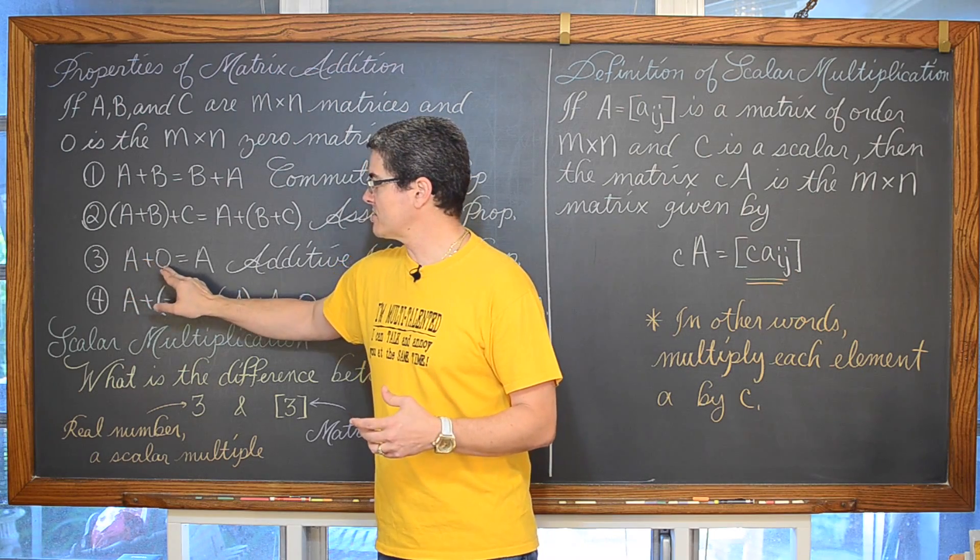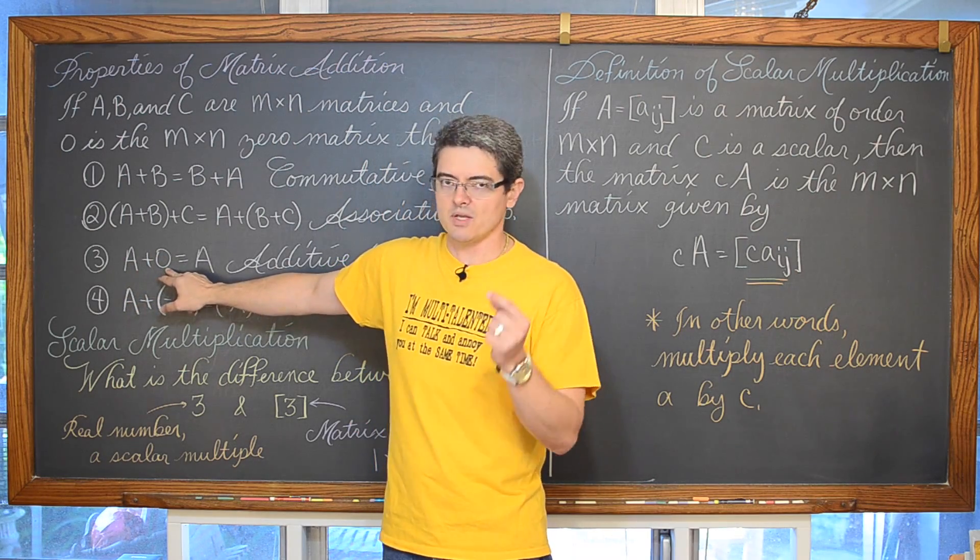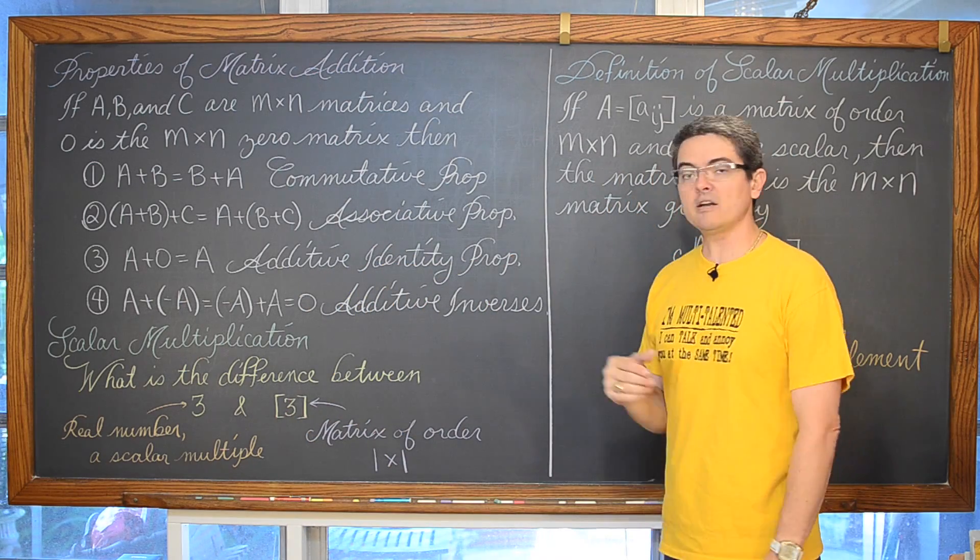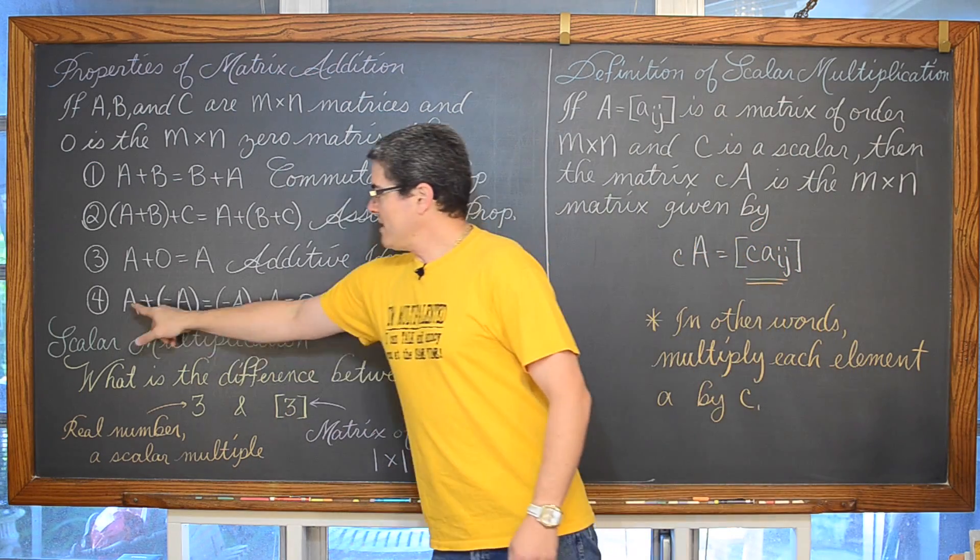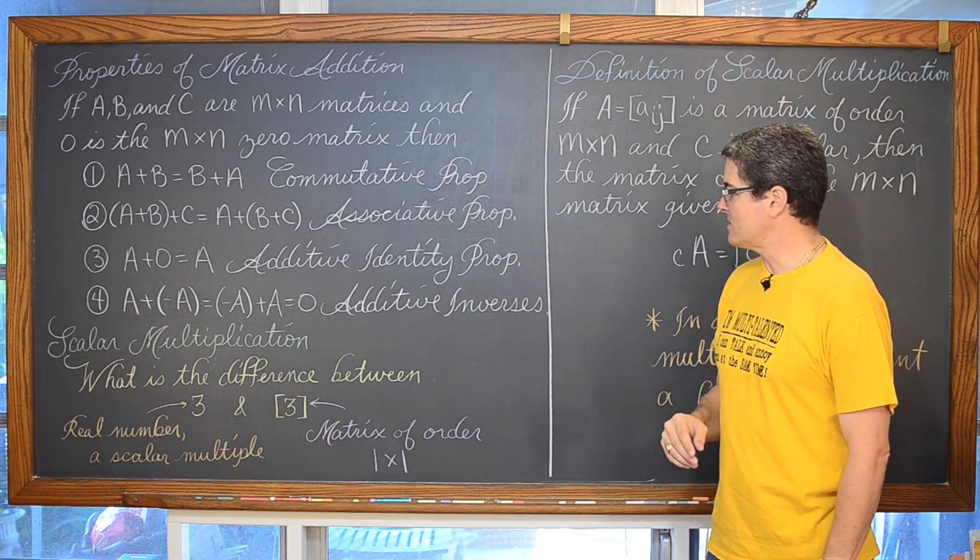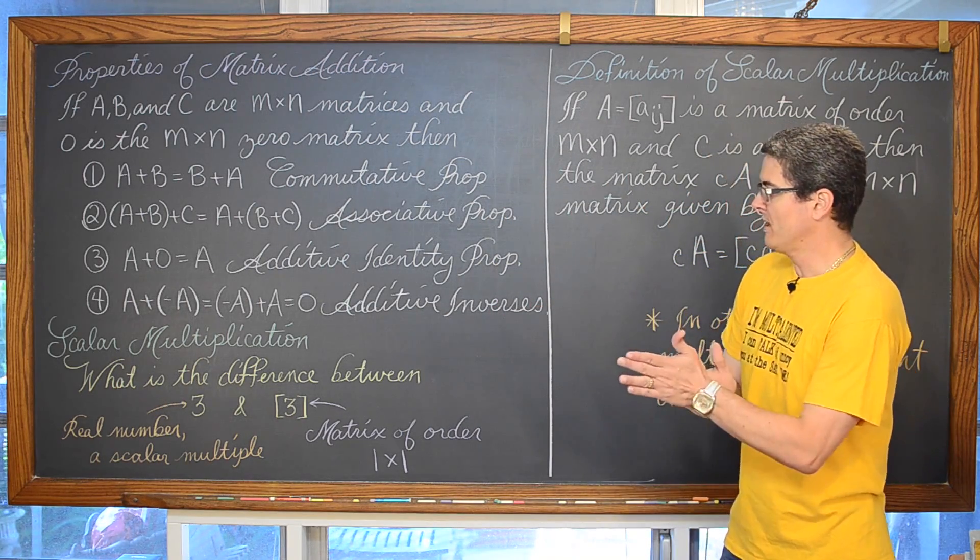I discussed this quickly in the previous scene. We have A plus zero matrix, A plus the zero matrix of the same order is still going to give you an answer of A. That is the additive identity property. If you add two matrices together and you get that zero matrix, then those are additive inverses.